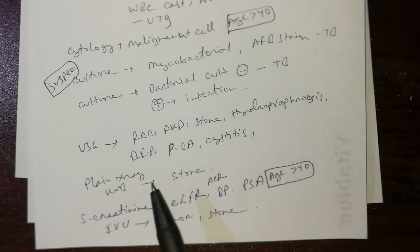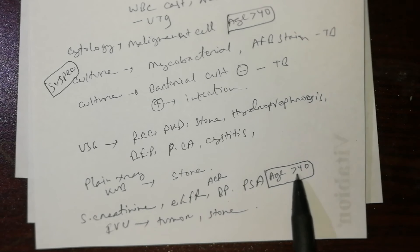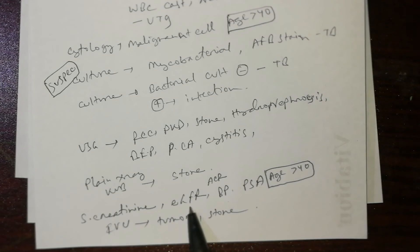Serum creatinine, eGFR, albumin-creatinine ratio, blood pressure, and PSA especially if more than 40 years for carcinoma. Serum creatinine, eGFR, ACR, and BP are all done for glomerulonephritis.